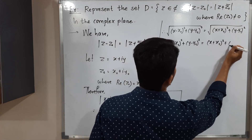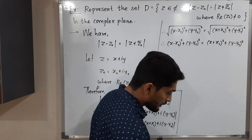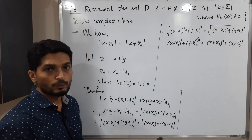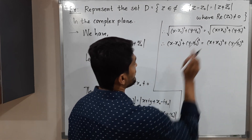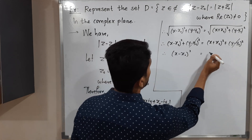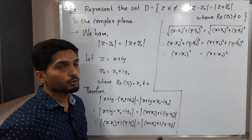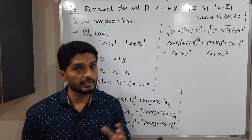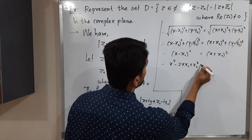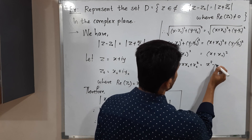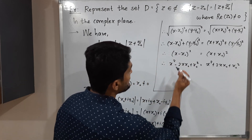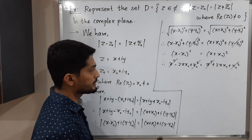Squaring both sides: (X minus X naught)² plus (Y minus Y naught)² equals (X plus X naught)² plus (Y minus Y naught)². The (Y minus Y naught)² terms cancel from both sides. We then expand the remaining brackets using the (A minus B)² and (A plus B)² formulas: X² minus 2X·X naught plus X naught² on the left, and X² plus 2X·X naught plus X naught² on the right.